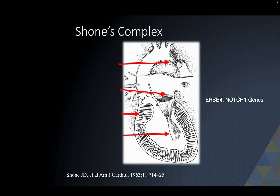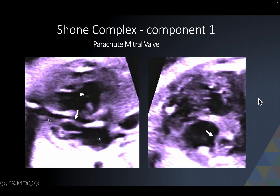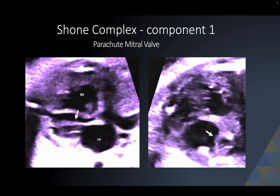There is a condition called Shone complex, which includes multiple left ventricular inflow and outflow obstructions. You can have a parachute valve, sub-aortic stenosis, a supramitral ring, and a coarctation or interruption of the aortic arch. You need a minimum of three findings to make the diagnosis of Shone complex, and it has a very clear genetic association. I am going to show you a Shone complex in a 24-week gestation fetus.